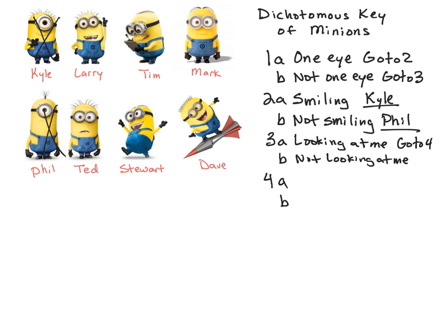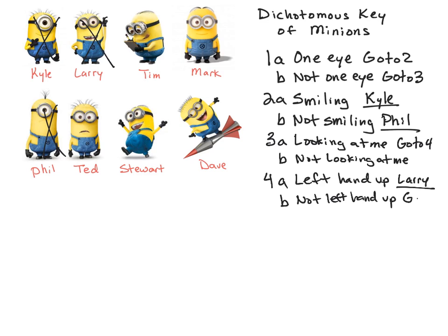I'll need another couple of choices here. On number four, I'm only looking at the ones looking at me, and I notice that one of them has his left hand up — Larry. So I'm going to write 'left hand up' and then 'not left hand up.' The only one with his left hand up is Larry, so I'll write Larry here and underline it. That leaves me with Mark and Ted. So if I look at Mark and Ted, I need another selection, so I'm going to write 'go to five.'